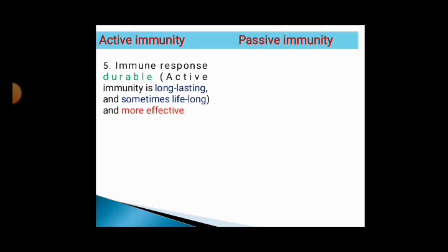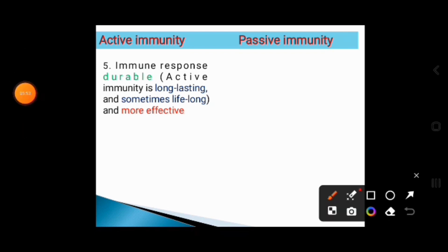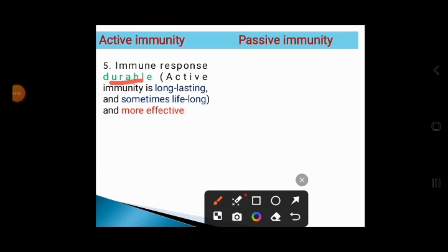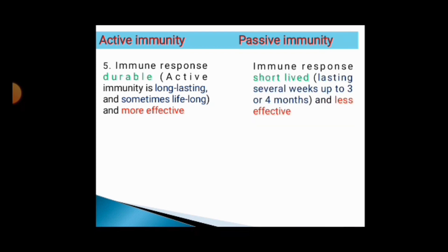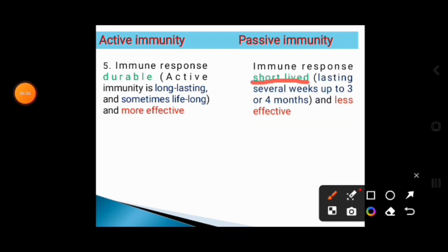The immune response is durable in the case of active immunity — that is, active immunity is long lasting, sometimes even lifelong. Whereas passive immunity is short-lived, lasting only up to 3 to 4 months.